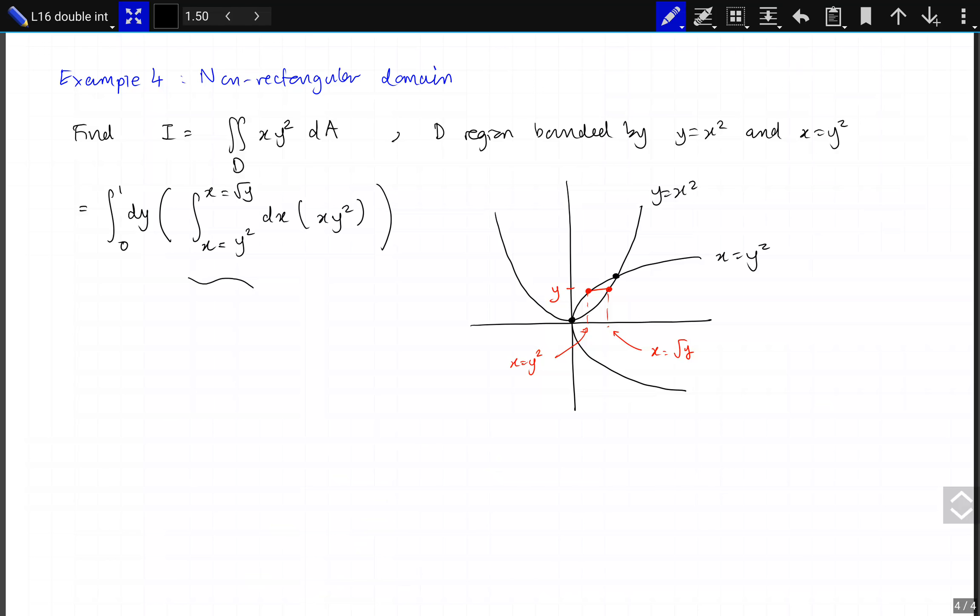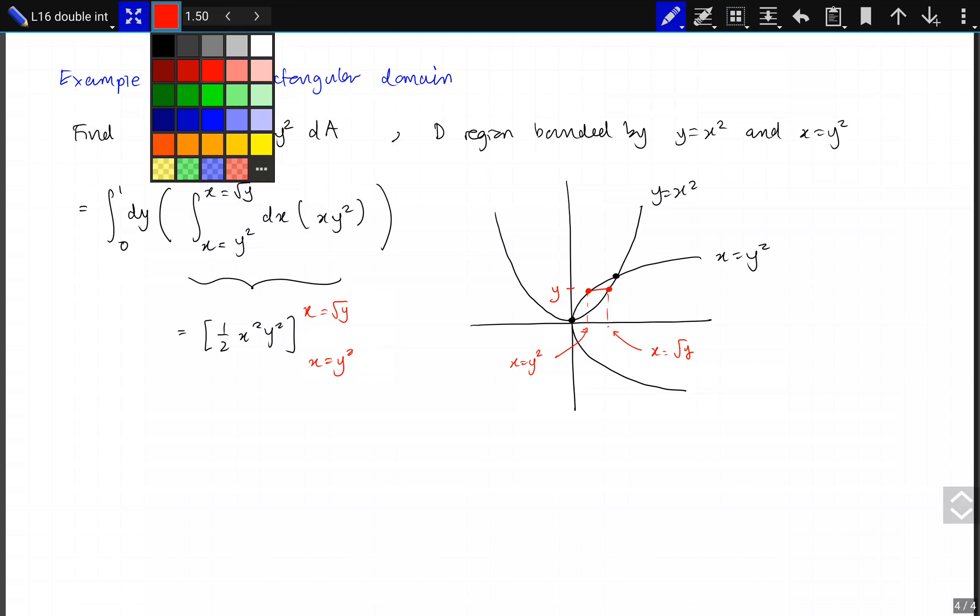This piece is equal to one-half x squared times y squared on this piece, the red piece if you like, matching the red in the diagram. So this equals one-half of y cubed minus y to the sixth.